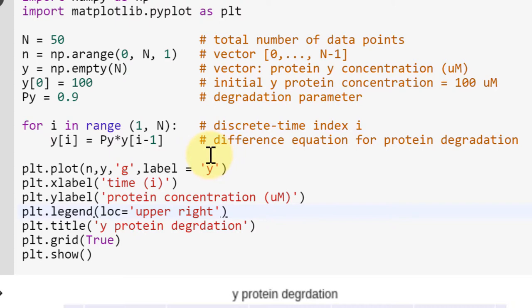So 1, 2, 3, 4, up to 49. And we have this degradation equation. Y of i is Py times y of i minus 1.